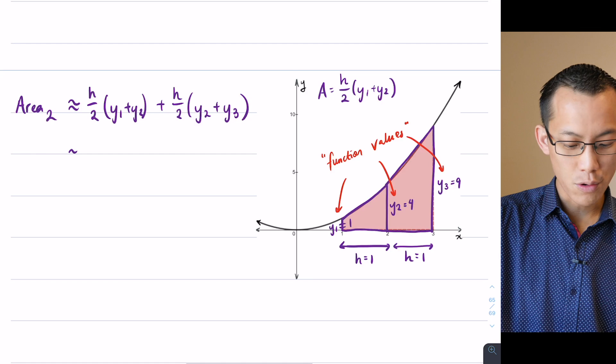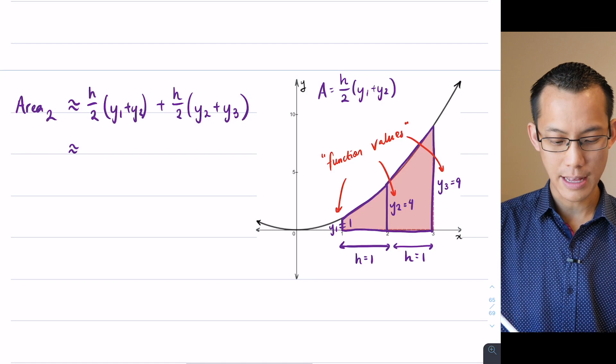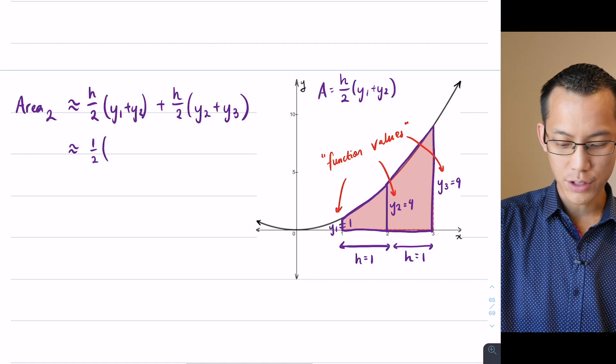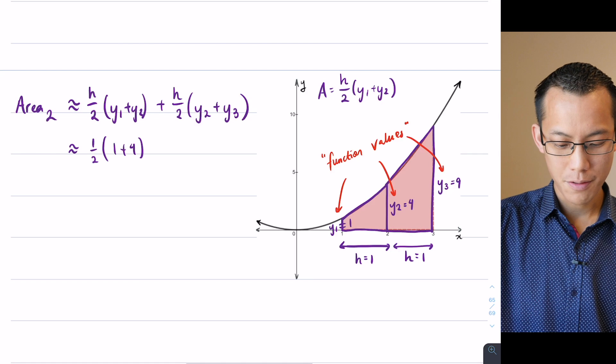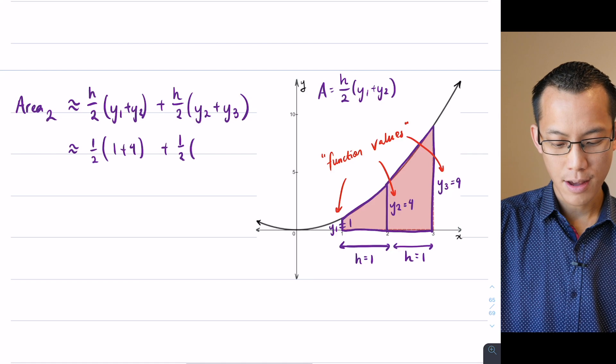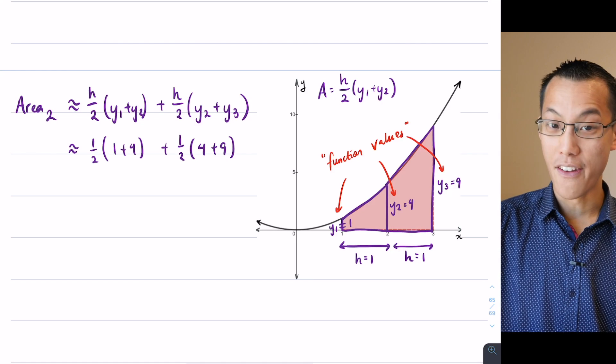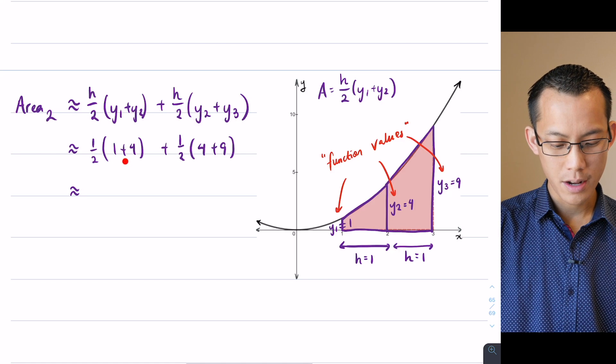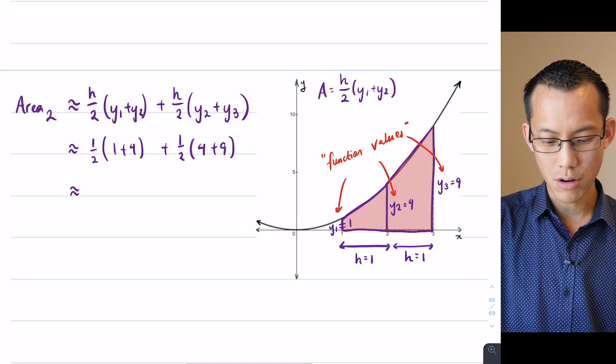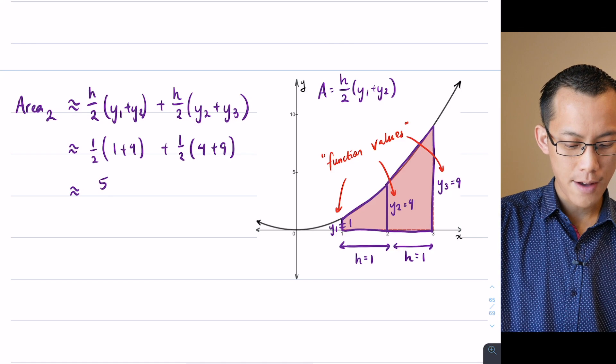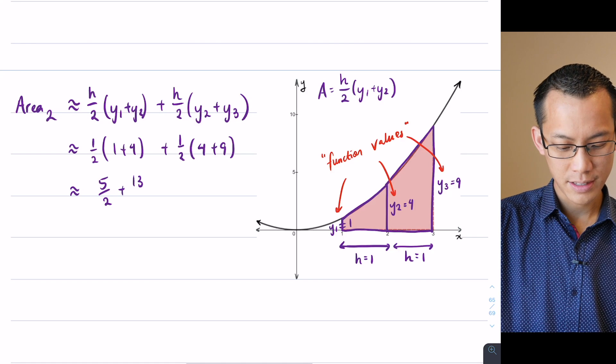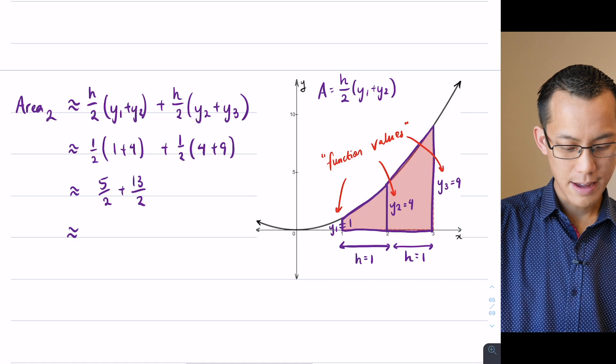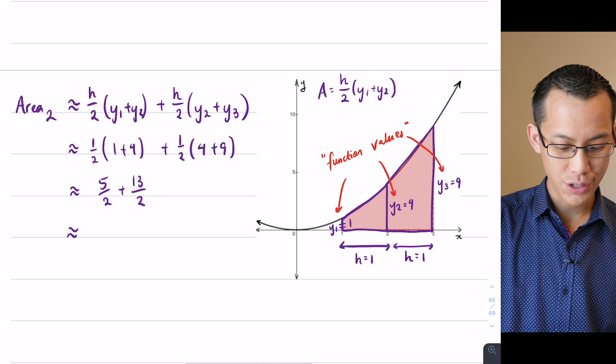Now, I can do all the substitutions here, right? We're going to return to this line later on, but I can write this as 1 over 2, 1 plus 4, and then it's 1 over 2 again, 4 plus 9. Let's go ahead and simplify. I'm going to get 5 on this one, and I'm going to get 13 on the other one, so that gives me 5 on 2, plus 13 on 2, that gives me 18 on 2, which is 9.